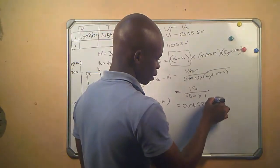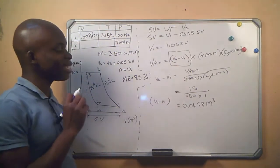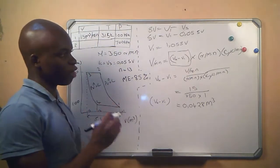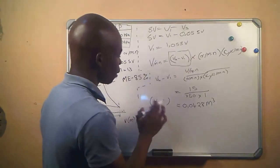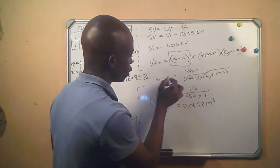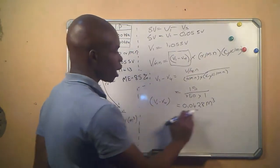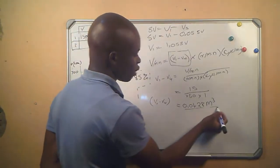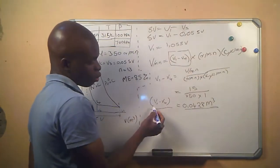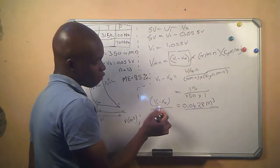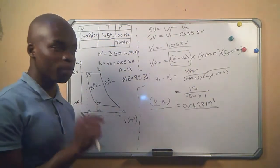This 0.0428 cubic meters is the volume of air entering the system when the induction valve opens in one stroke — the effective volume, which is V1 minus V4. However, this is not what we were asked to calculate. Looking at V1 minus V4, the value of V1 is already expressed in terms of the swept volume SV, which is the same swept volume we are trying to find.